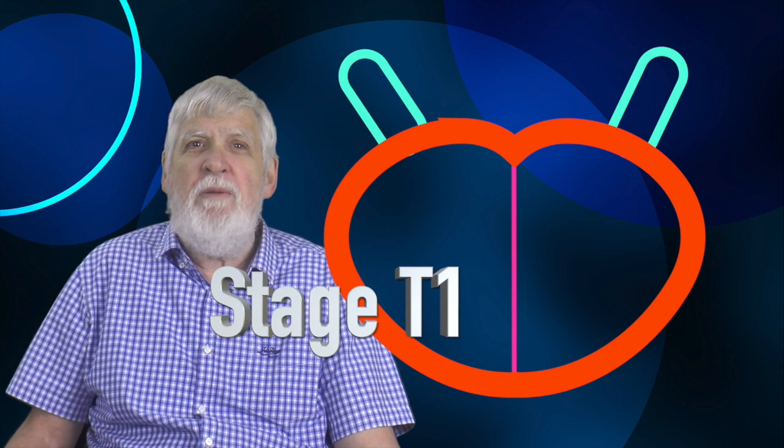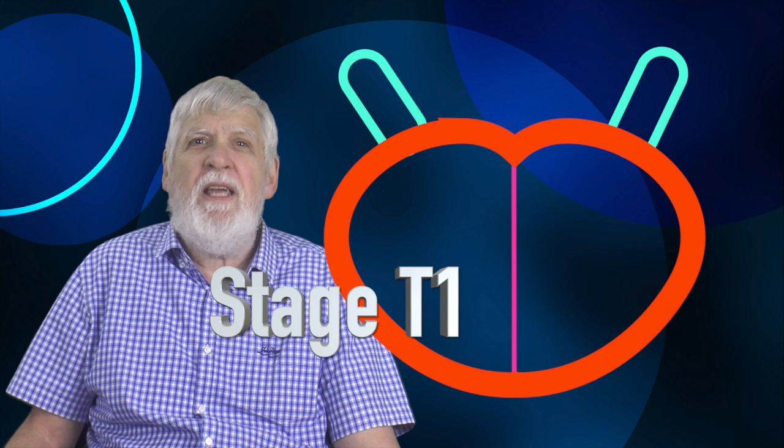So first, the T rating. T for tumor. Tumor is another name for cancer. Your T rating tells about the cancer that started growing in your prostate. T1, T2, T3, T4. Higher numbers are generally more serious. I can't picture T1 cancers. A T1 cancer can't be felt by a doctor or seen on a scan. So we'll start with T2 cancers. T2 cancers can be felt by doctors.